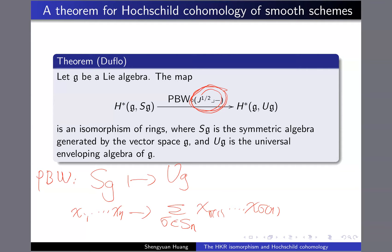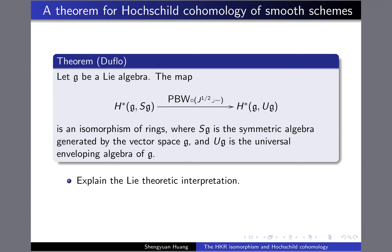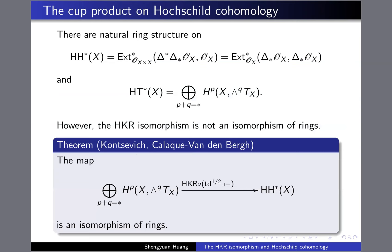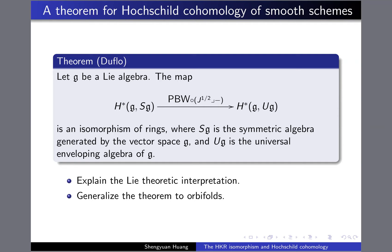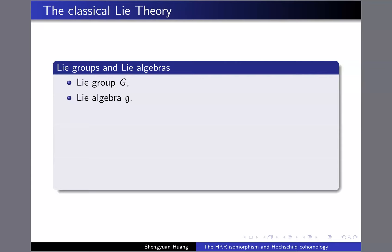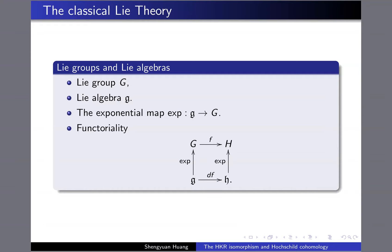I want to explain the Lie-theoretic interpretation of the previous theorem for orbifolds. In the classical Lie-theoretic setting, we have Lie groups and their tangent space — the Lie algebra — and we can consider the exponential map from the Lie algebra to the group. Moreover, if you have a group homomorphism F, you can compute the induced map on the tangent space, then put the exponential map in — the diagram is commutative.